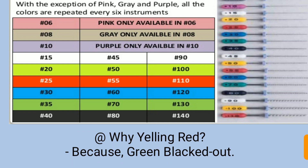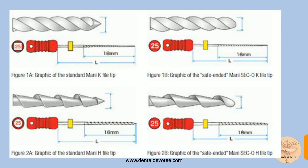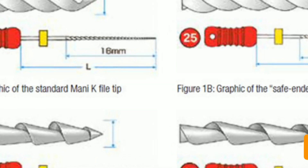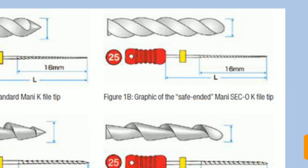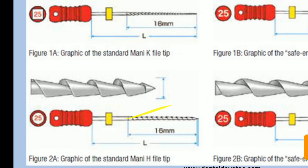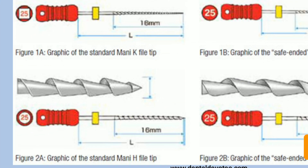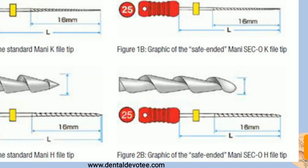The working blade of the file begins at the tip, denoted as D0, and extends exactly 16 mm up towards the shaft, ending at D16. The tip angle should be 75 degrees plus or minus 15 degrees for a standard instrument. For a safe-ended instrument, the tip is rounded and non-cutting — only the sides cut. Similarly, for the H-file, the tip is also rounded and non-cutting.